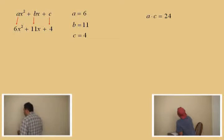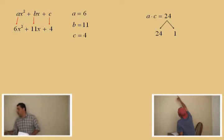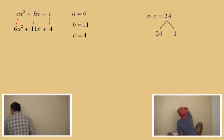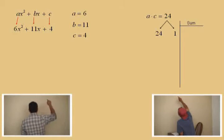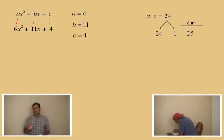And we'll start with 24 times 1. Now, 24 times 1 do multiply to 24. Now, we want to also look at their sum. So, think about this. 24 times 1 is 24. Now, Charlie, what's 24 plus 1? 25. That is 25. And that is the sum. Now, does that sum equal the b term, Charlie? No. Because our b was an 11. We're looking for the 11.